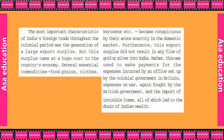Several essential commodities — food grains, clothes, kerosene, etc. — became conspicuous by their absence in domestic markets. Furthermore, this export surplus did not result in any flow of gold or silver into India.